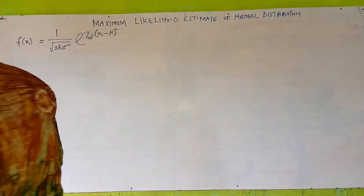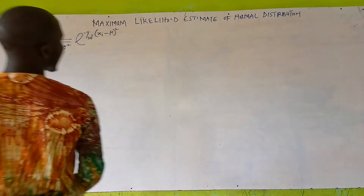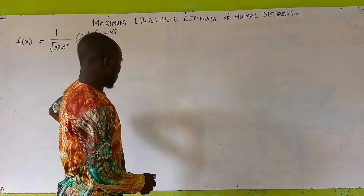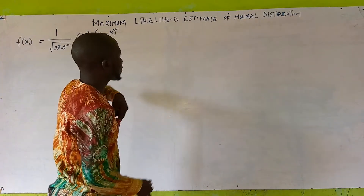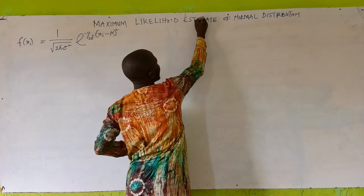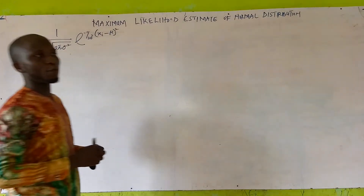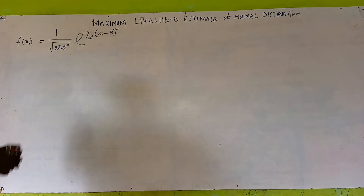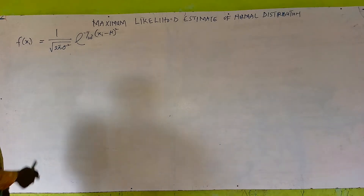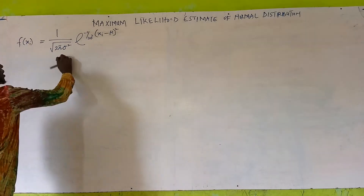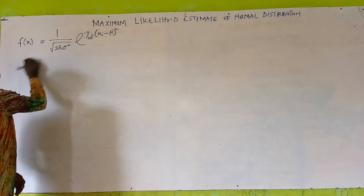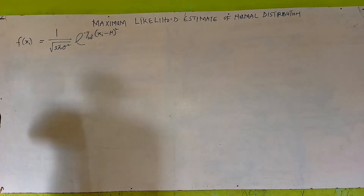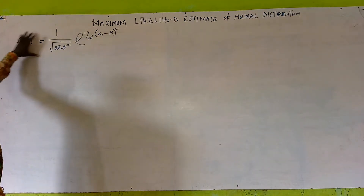Today we will be looking at the maximum likelihood estimate of normal distribution. Suppose we have a set of observations from 1 to n, a positive number, where we have x1, x2, up to xn. This variable follows the normal distribution, and the probability distribution function is given as follows.